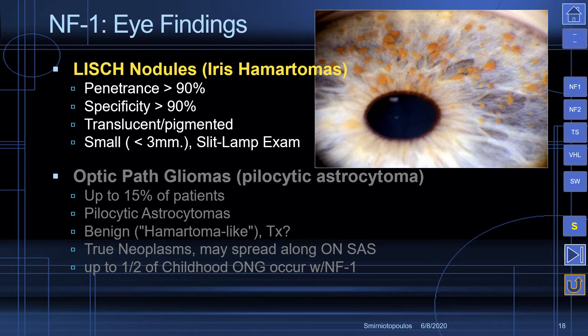Turning to orbital and ocular findings: Lisch nodules are hamartomas that appear on the iris. Their penetrance is greater than 90% in patients with the chromosome 17 mutation that causes NF1, and their specificity is greater than 90% for patients who have two or more Lisch nodules. A slit lamp examination is the best way to look for these, as they can be easily missed when they are not pigmented.